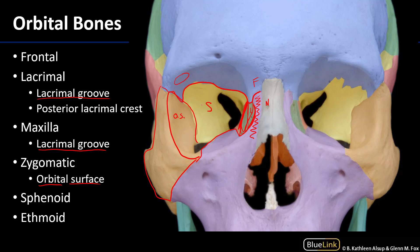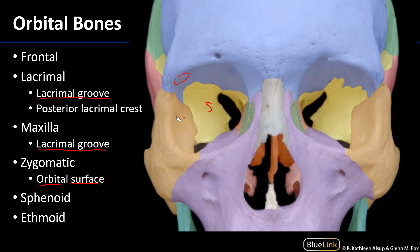Continuing our tour, just between the sphenoid and the lacrimal bone there is another bone — the ethmoid. The ethmoid forms the medial wall of the orbit. These are just rough descriptions: medial wall, lateral wall, floor, roof — some of these other bones also contribute to these structures.